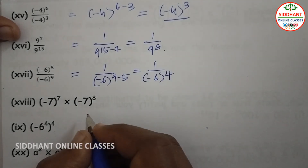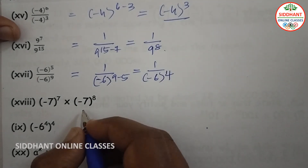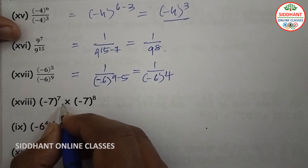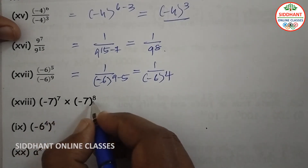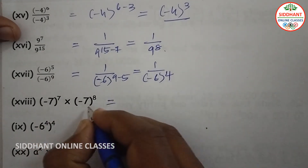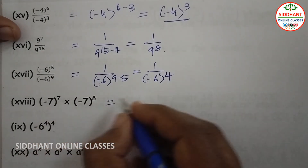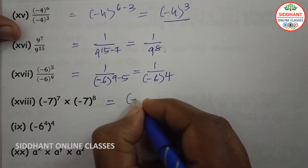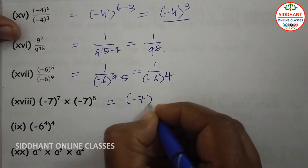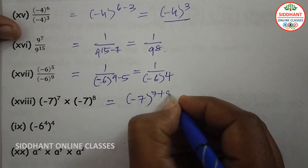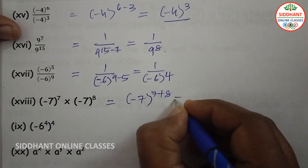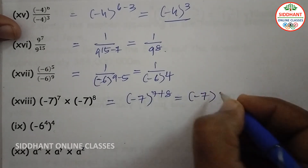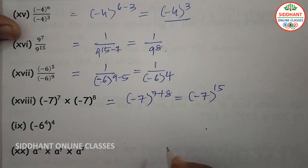Eighteenth one: (-7) to the power of 7 into (-7) to the power of 8. Bases are same, so we add the powers: (-7) to the power of 7 plus 8, that will be (-7) to the power of 15.